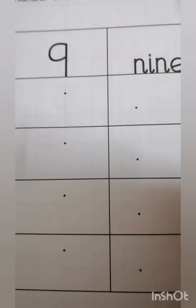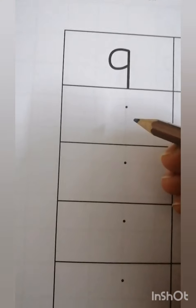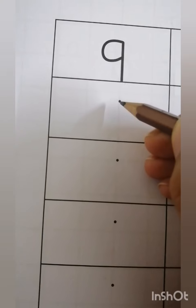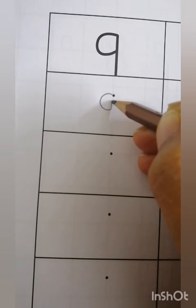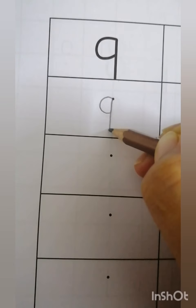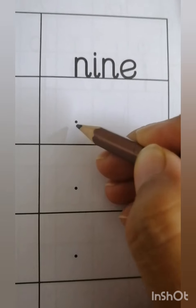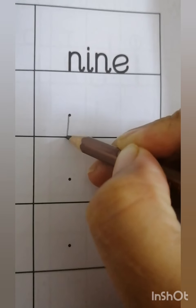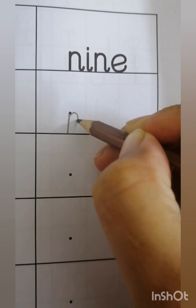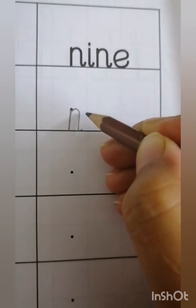Now we learn how to write number 9 and the spelling. First we write 9. Put your pencil on the dot, make curve, go up and down. It's 9. And the spelling of 9, very easy spelling.